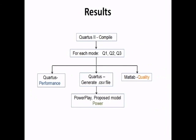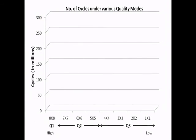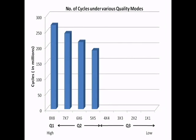Next we present the results which are obtained using the tools shown in this figure. In order to estimate the power under various quality modes, we use Altera's PowerPlay Early Power Estimator as shown in this figure. As seen here, our significance-driven approach results in a reduction of computation cycles under various quality modes of up to 58%.